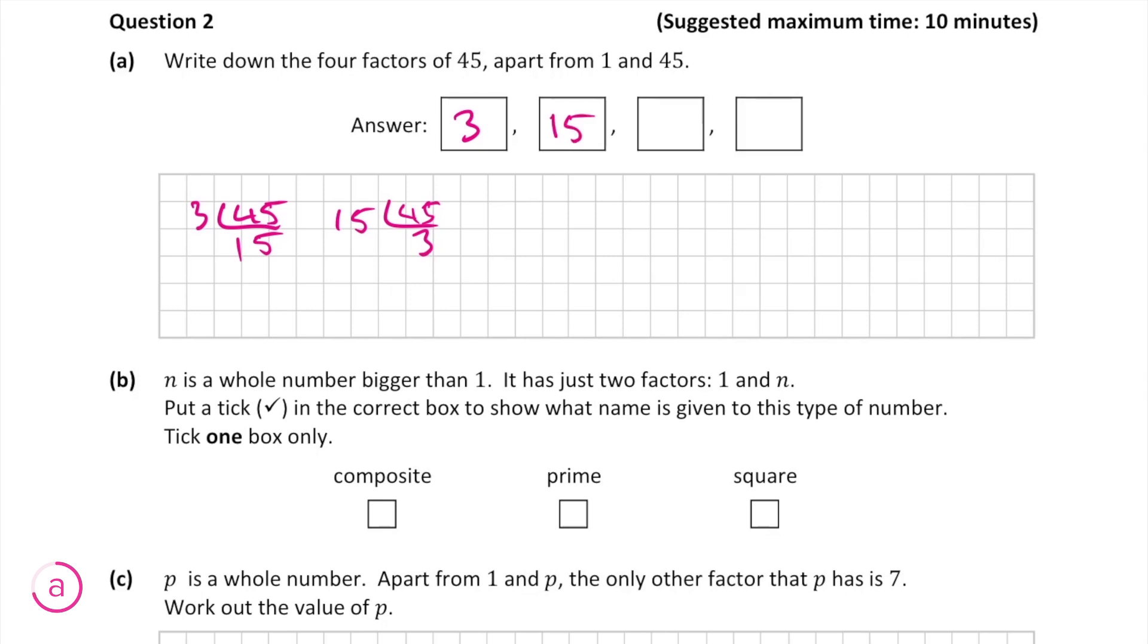Another fairly obvious factor is 5, because it ends in a 5, it must be divisible by 5. And 45 divided by 5 is 9, so 5 and 9 are also factors of 45.